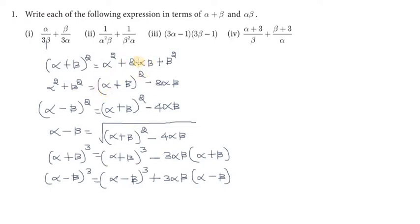It is plus 2 alpha beta on this side, and minus on the other side. So this formula gives us alpha minus beta whole square, which equals alpha plus beta whole square minus 4 alpha beta. So alpha minus beta, this is squared.